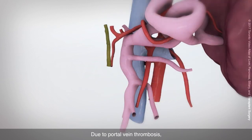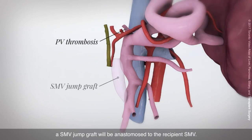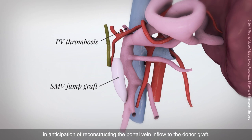Due to portal vein thrombosis, an SMV jump graft will be anastomosed to the recipient SMV in anticipation of reconstructing the portal vein inflow to the donor graft.